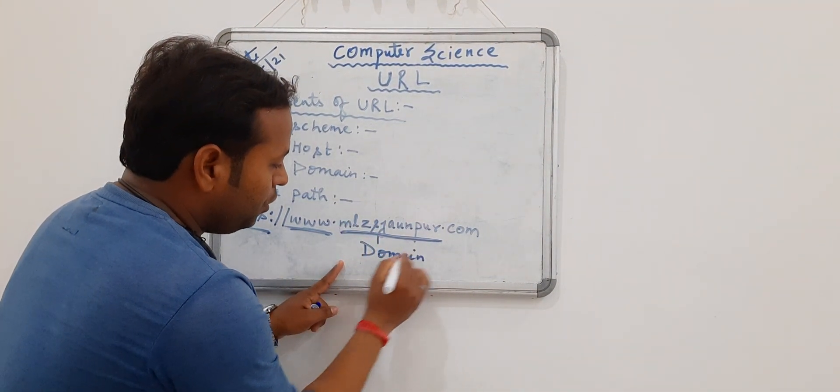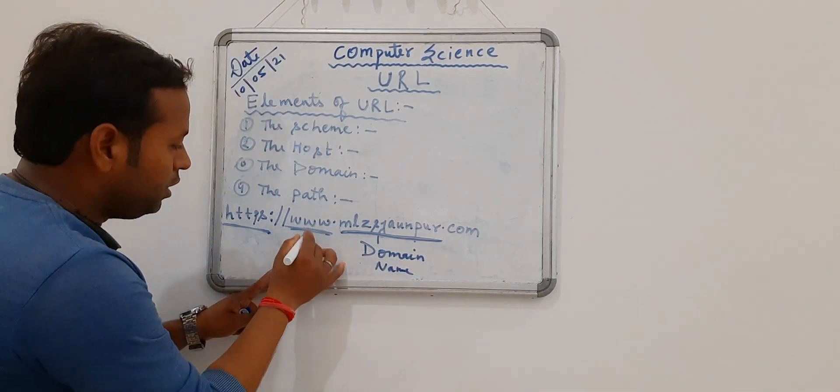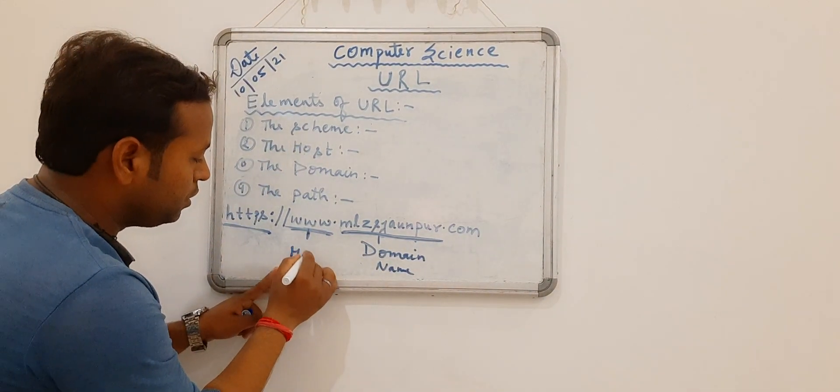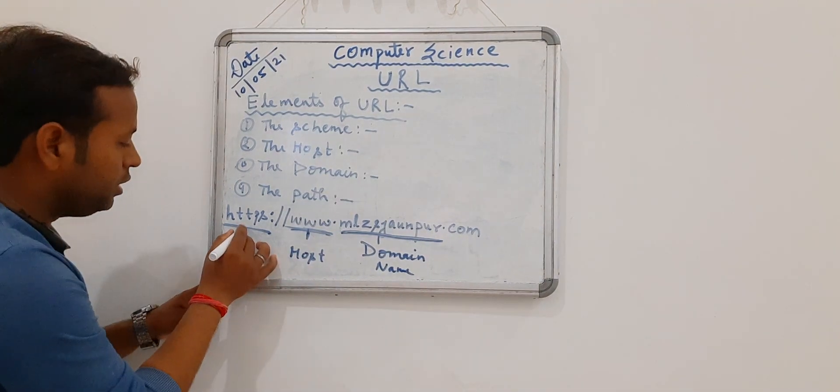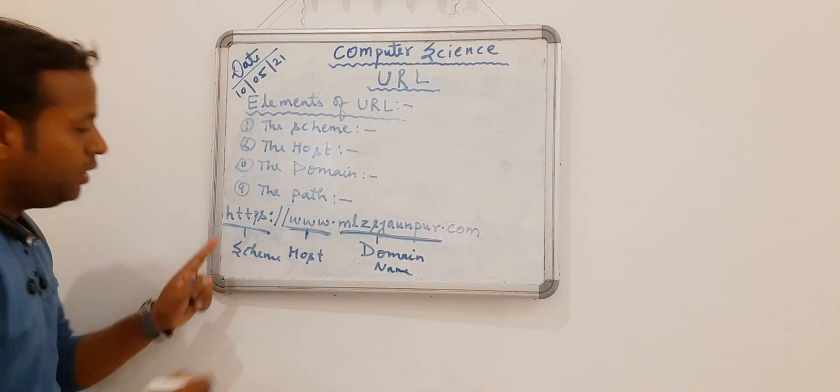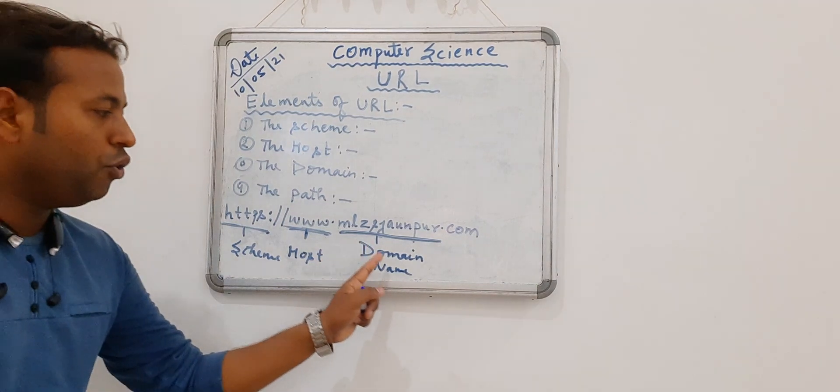This is called what? Domain name. This is called what? Host. And this is called what? Scheme. Okay. Scheme, host, domain name.